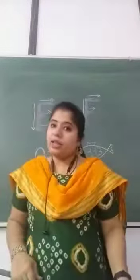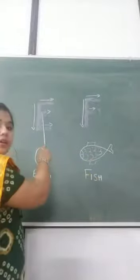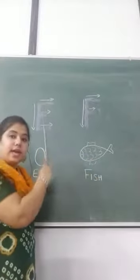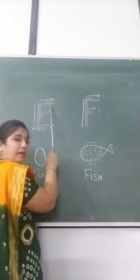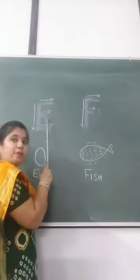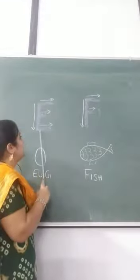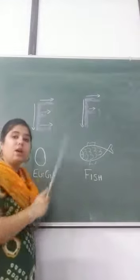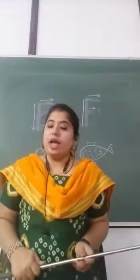How do we write the letter E? We first make a standing line, then a sleeping line at the top, a sleeping line at the middle, and a sleeping line at the bottom. That makes the letter E.